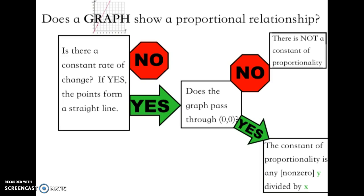So here's the first question: does a graph show a proportional relationship? You can follow this flowchart. Is there a constant rate of change — do the points form a straight line? If not, say no. If they do, ask yourself: does the graph pass through (0, 0)? If no, it's not proportional and there won't be a constant of proportionality. If yes, take any non-zero y divided by its corresponding non-zero x — that gives you your constant of proportionality.